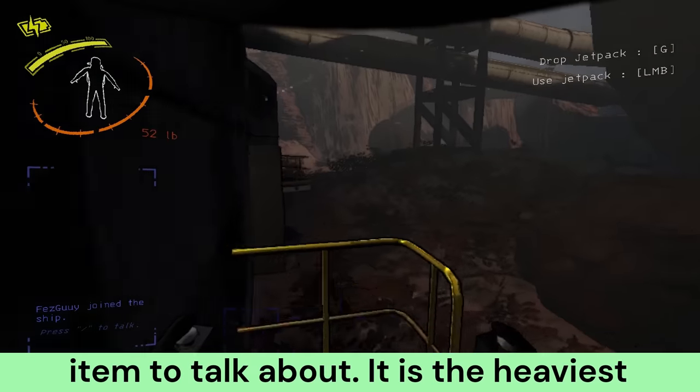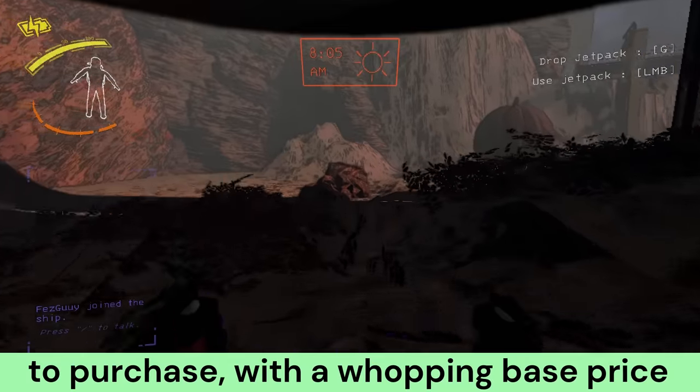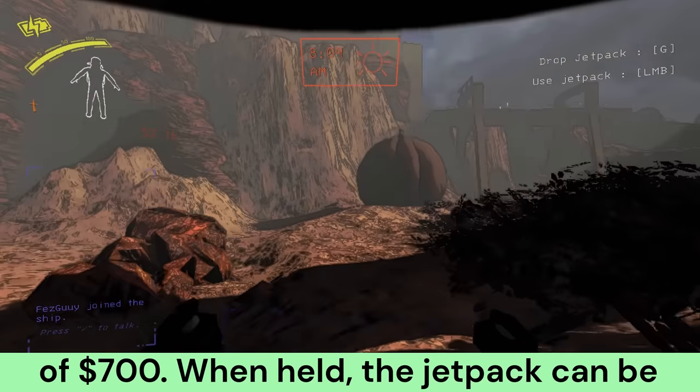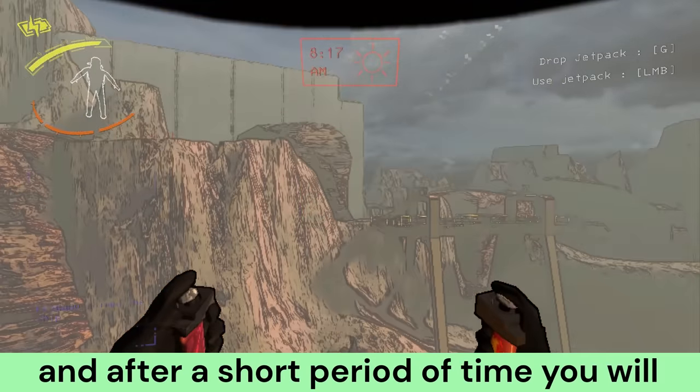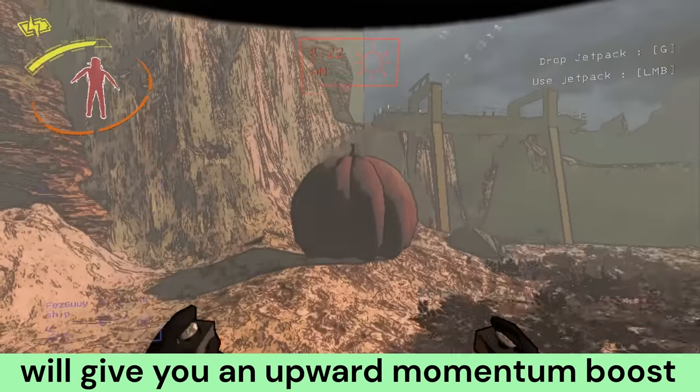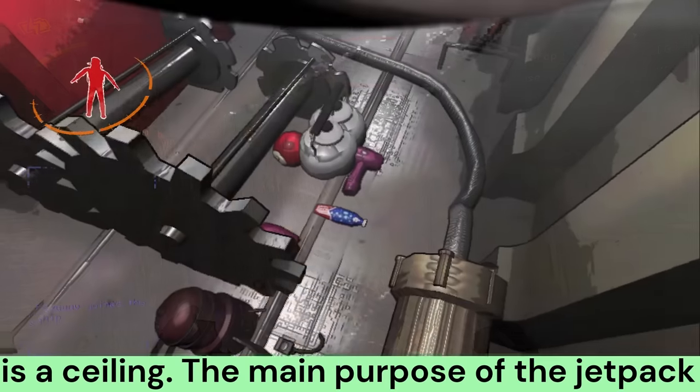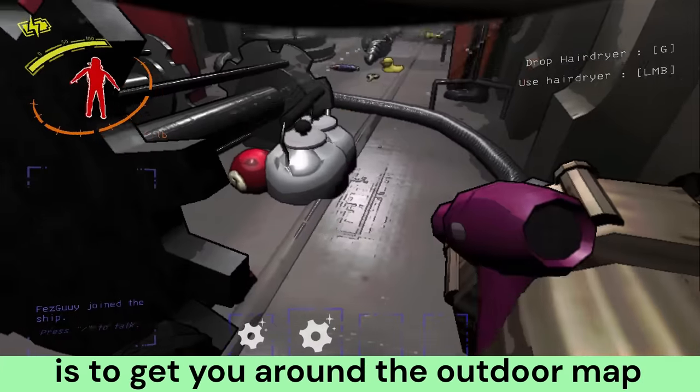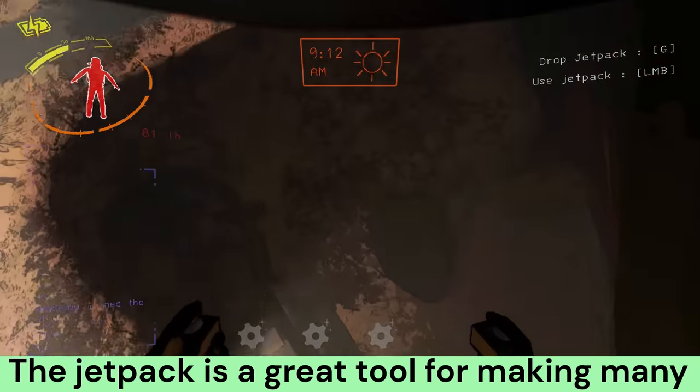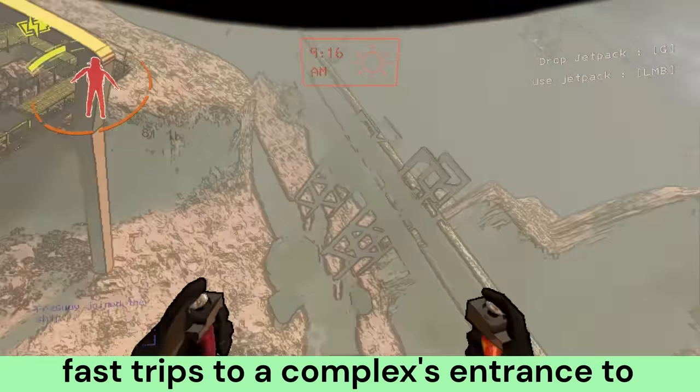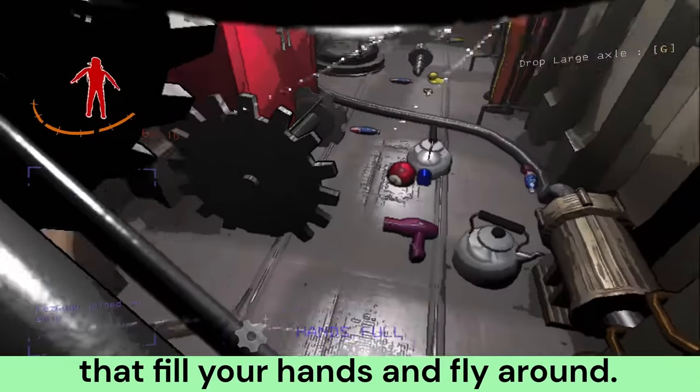The jetpack is the last battery-powered item to talk about. It is the heaviest purchasable item at 52 pounds, and the most expensive non-cosmetic item to purchase, with a whopping base price of $700. When held, the jetpack can be activated by holding down the left mouse button to begin accelerating. Jumping while lifting off will give you an upward momentum boost and send you quite high into the air.